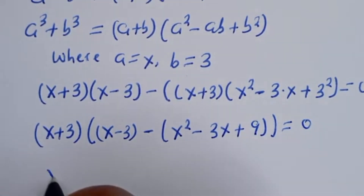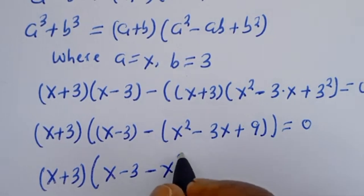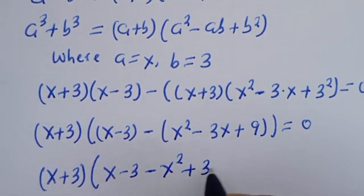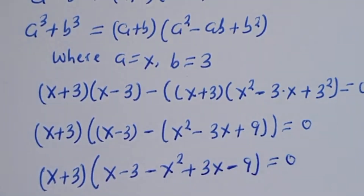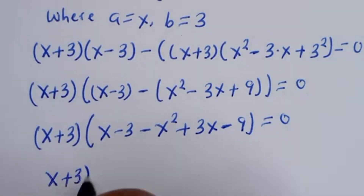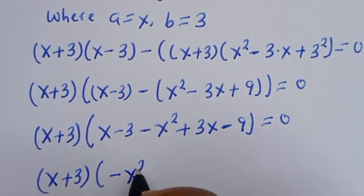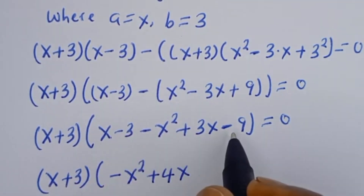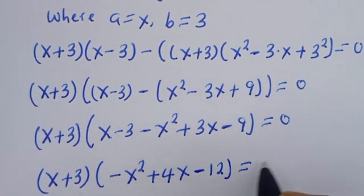Expanding inside the bracket: S minus 3 minus S squared plus 3S minus 9 equals 0. Combining like terms gives S plus 3 bracket negative S squared plus 4S minus 12 equals 0.